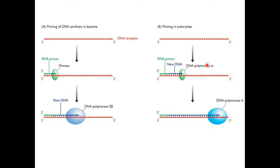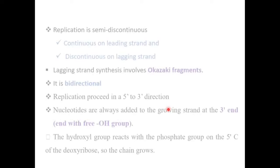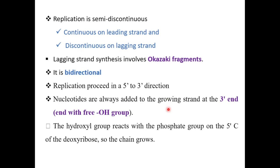The primer provides a free hydroxyl group; new DNA synthesis begins there. DNA polymerase alpha takes part in the synthesis of the new strand. Finally, the new strand is formed.